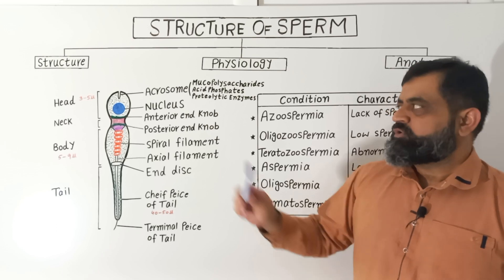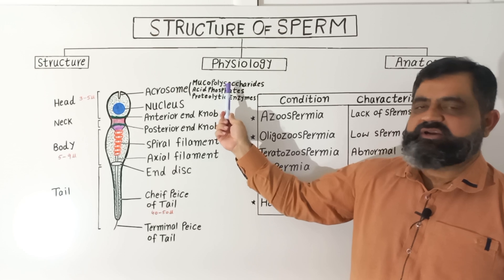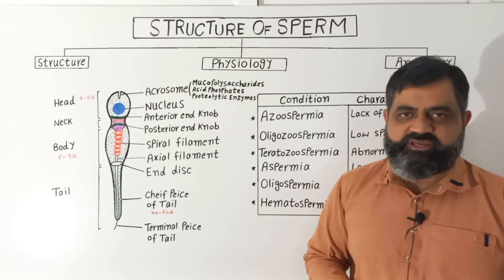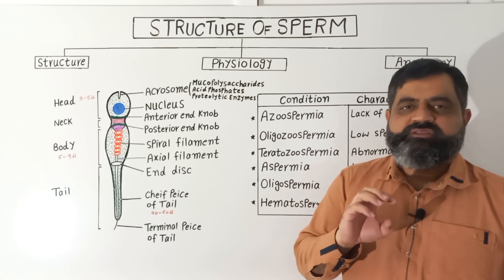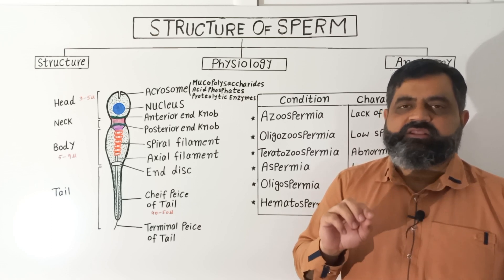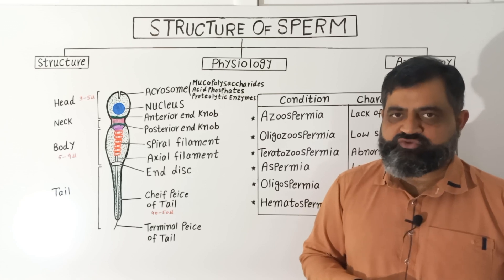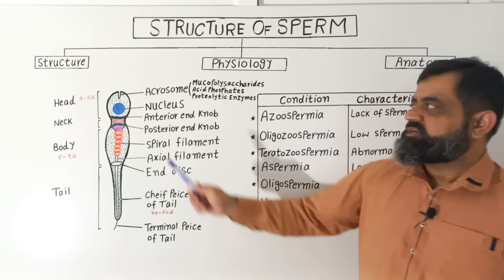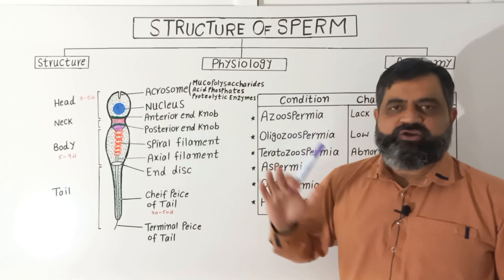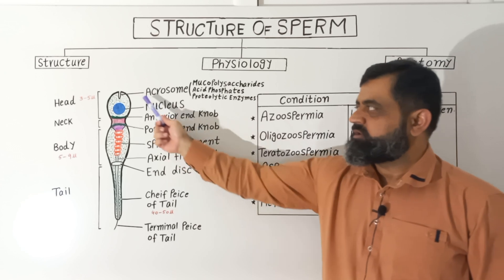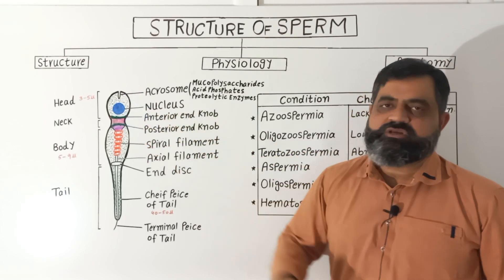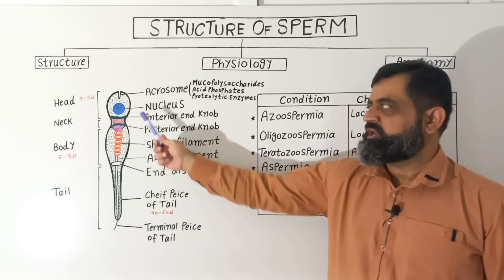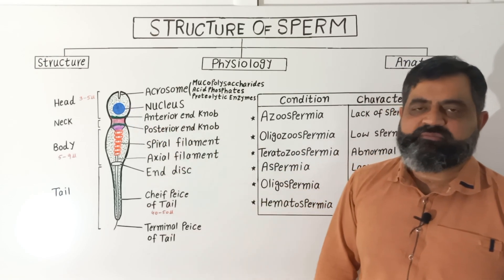The acrosome usually contains mucopolysaccharides, acid phosphatases, and proteolytic enzymes, which help the sperm to penetrate the ovum for the process of fertilization. So it is a very important part of the sperm. Just behind the acrosome there is the head, which has a length of three to five microns and contains a compact nucleus with chromosomal chromatin material and cytoplasm.